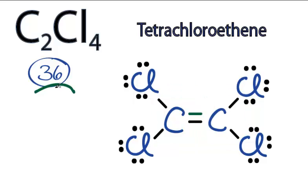So we've used all 36 valence electrons in the C2Cl4 Lewis structure. All the atoms have octets, so we're done.